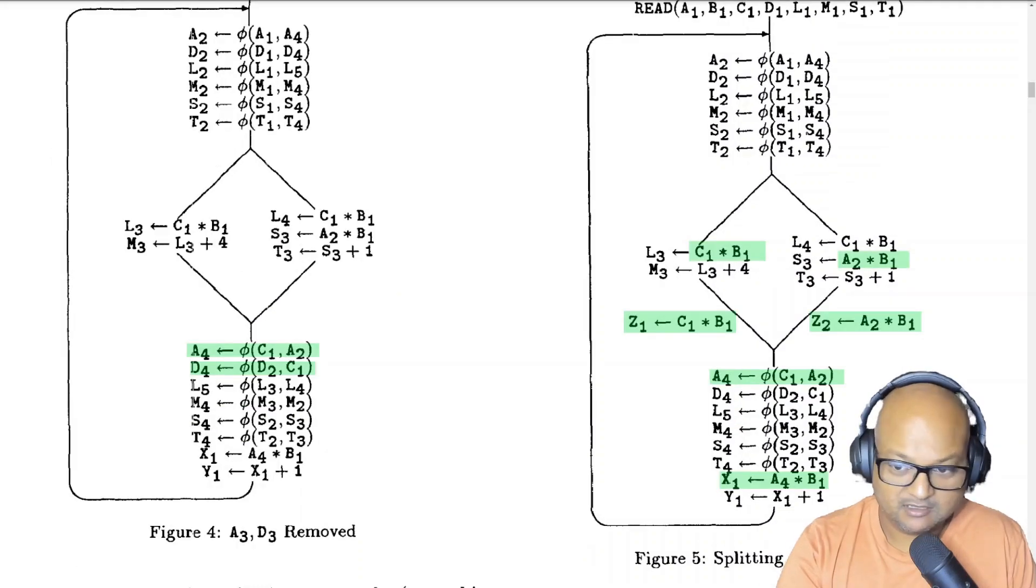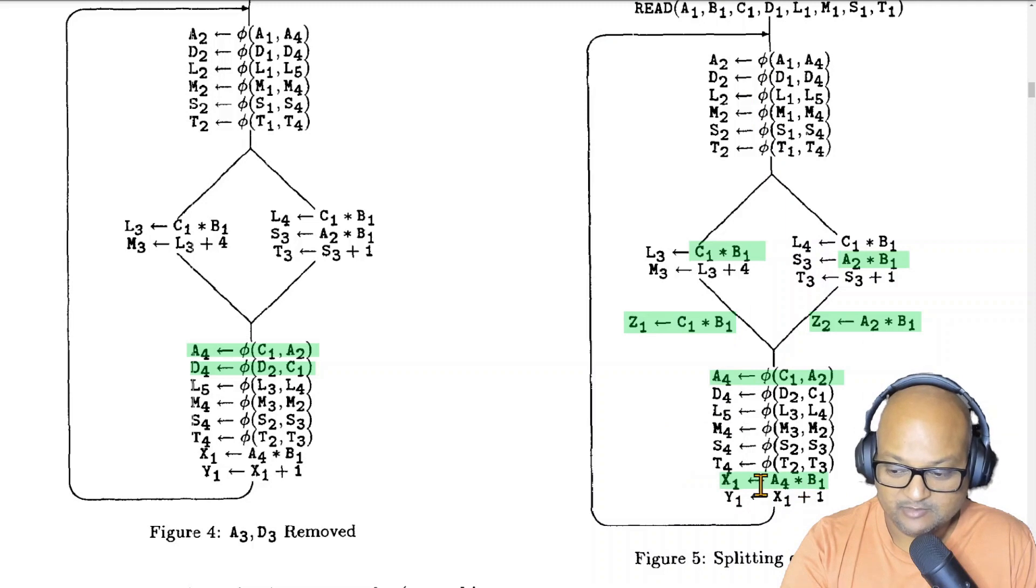We removed a3 and substituted it with c1 over here and we also removed d3 and substituted it with c1 over here in the assignment to d4. Now we come to the next phase of eliminating redundant computations and that is looping over ranks. So remember that back in the very first computation of the SSA form we also computed the rank of each expression and that's what we're going to start using right now.